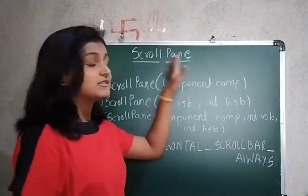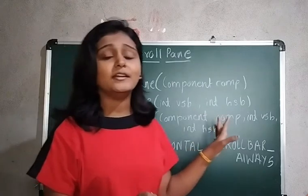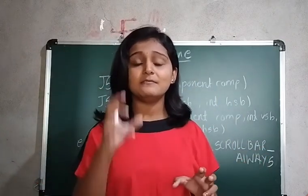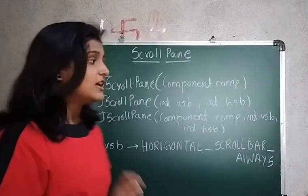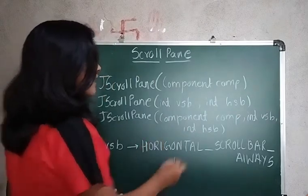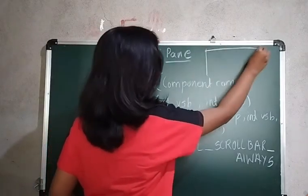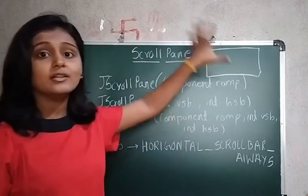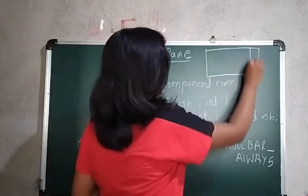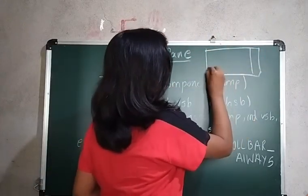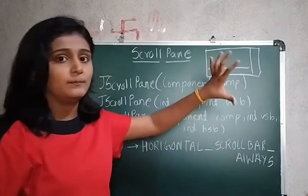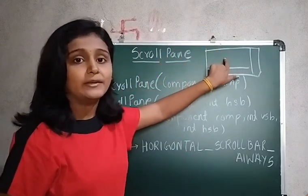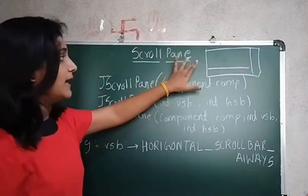The JScrollPane is a component which has a rectangular area within which there are other components. The ScrollPane will have a vertical and horizontal scrollbar, and within it there will be a component. This is what the ScrollPane is.